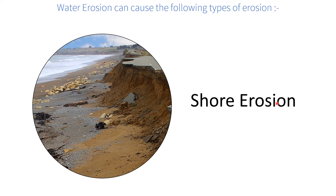Shore erosion is widespread along coastal areas, especially on the eastern coast where floods and storms are very common. Shore erosion can be checked by deepening the riverbeds, which will prevent floods. Deepening of riverbeds means that dredging has to be done — the riverbed needs to be cleared of all the silt and sand which it has been accumulating over a long period of time.